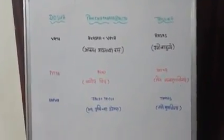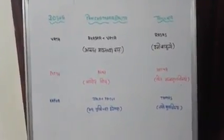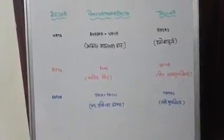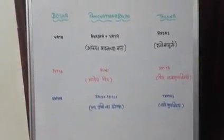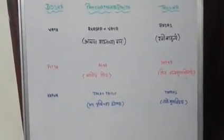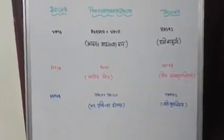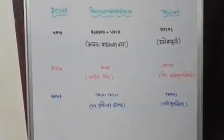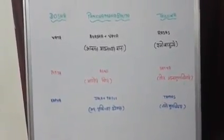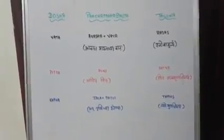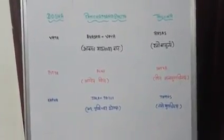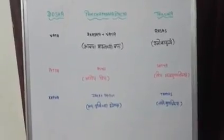About the relationship of the Doshas with Panchamahabhuta and Triguna. In classics, we get a reference that Akasha Marutabhyam Vataha, i.e., Akasha plus Vayu Mahabhuta constitutes Vata Dosha. With regards to the Triguna, Rajobohulam Vayuhu — so Vata is said to be Rajoguna Bahulya.